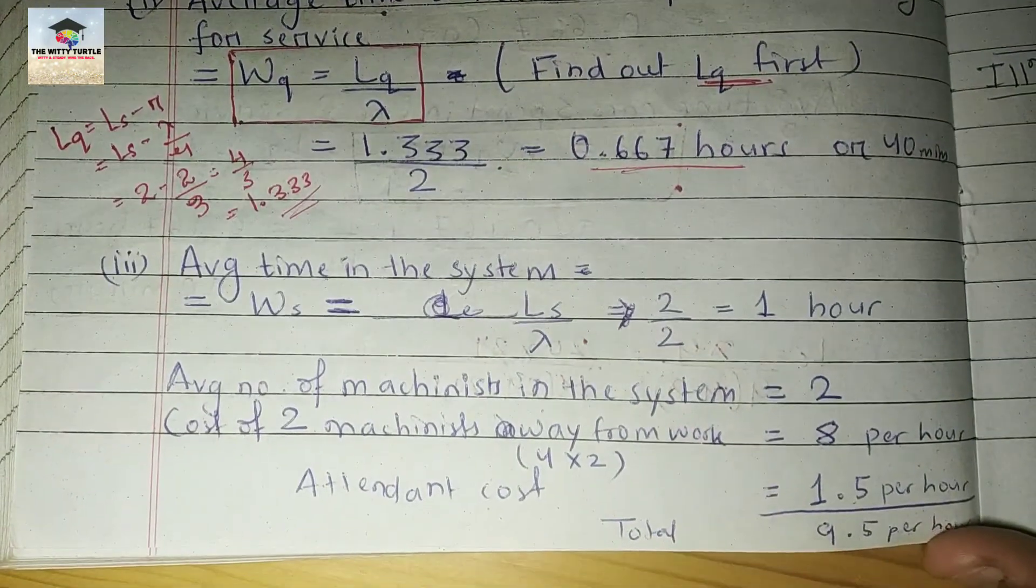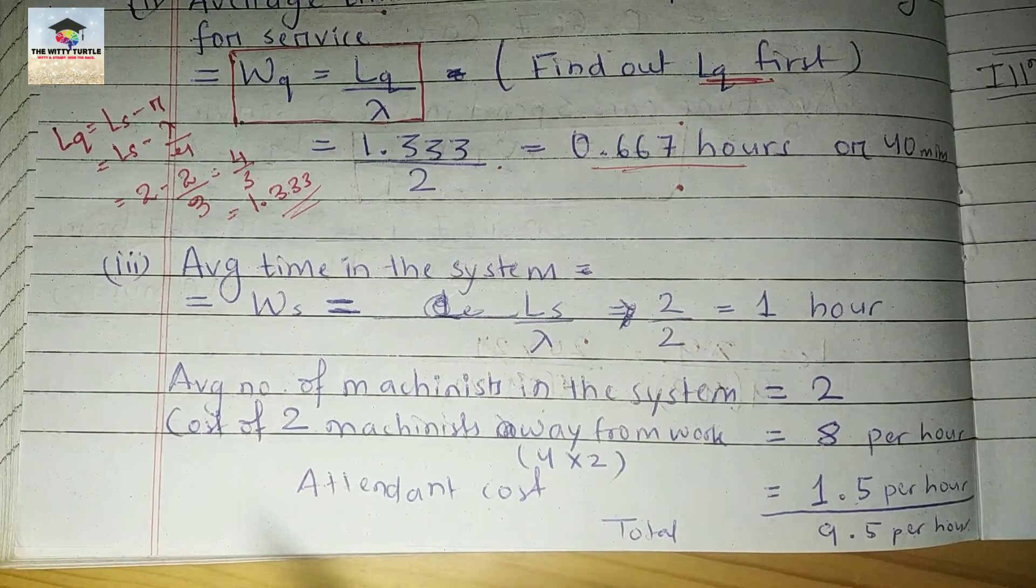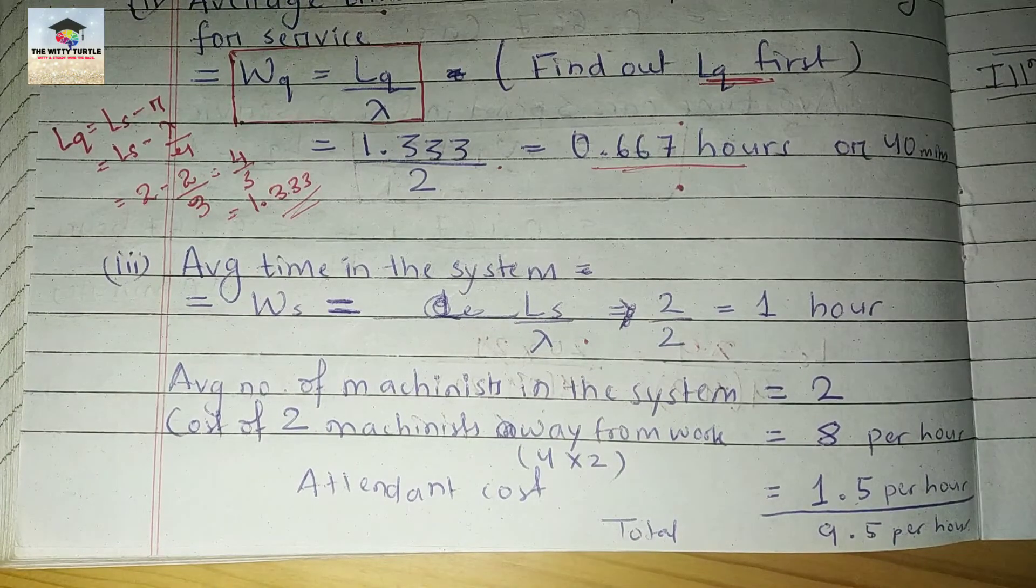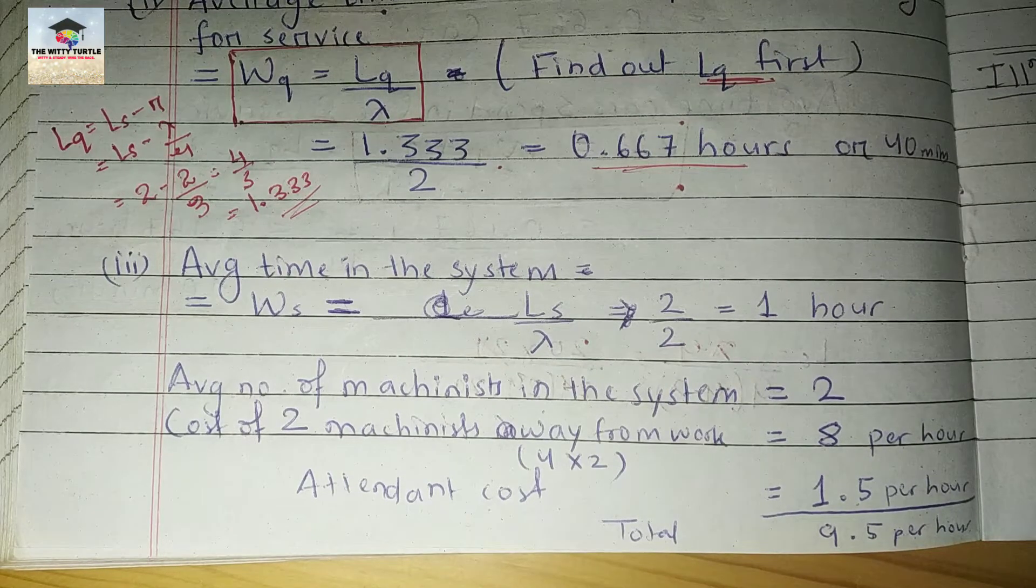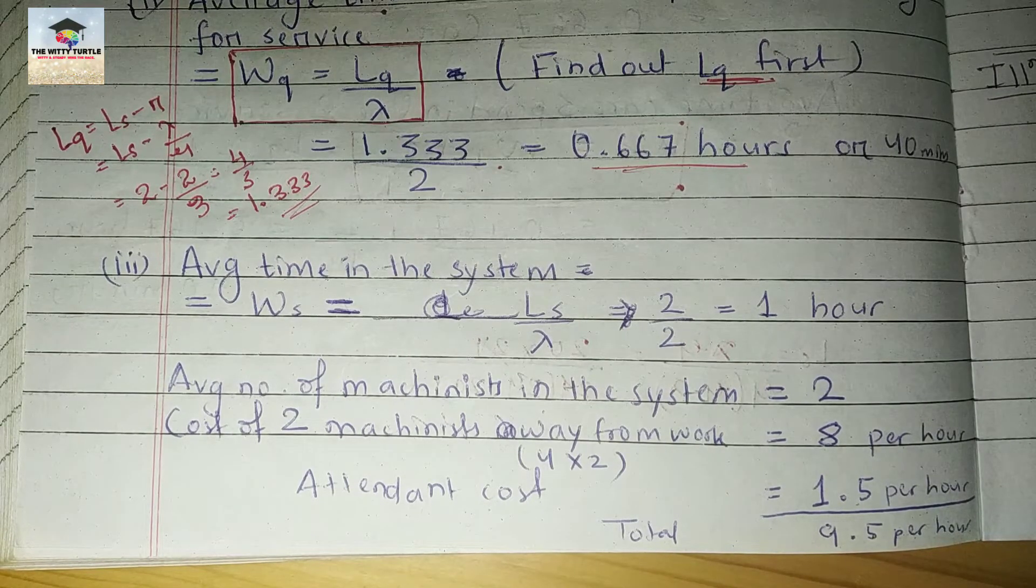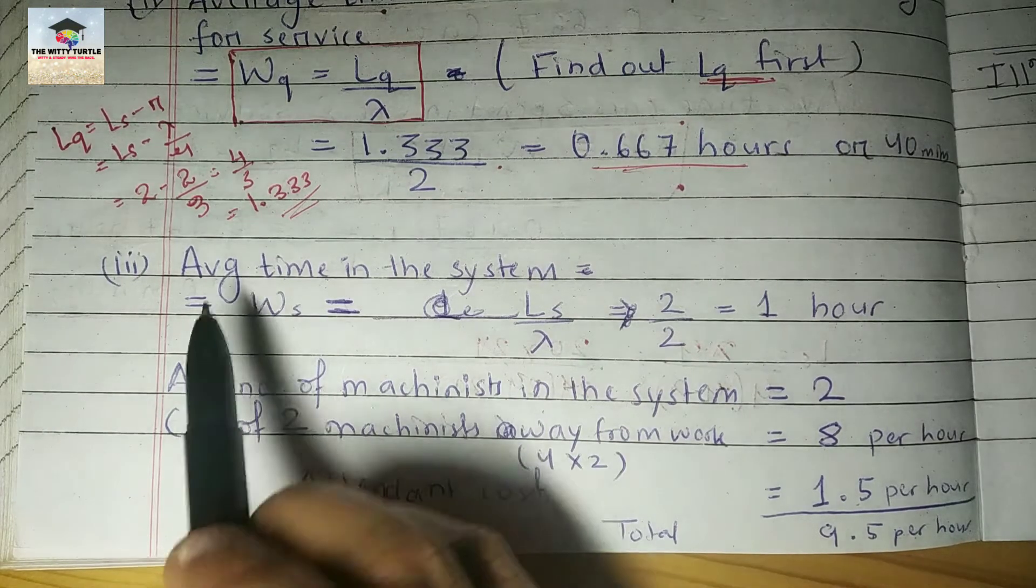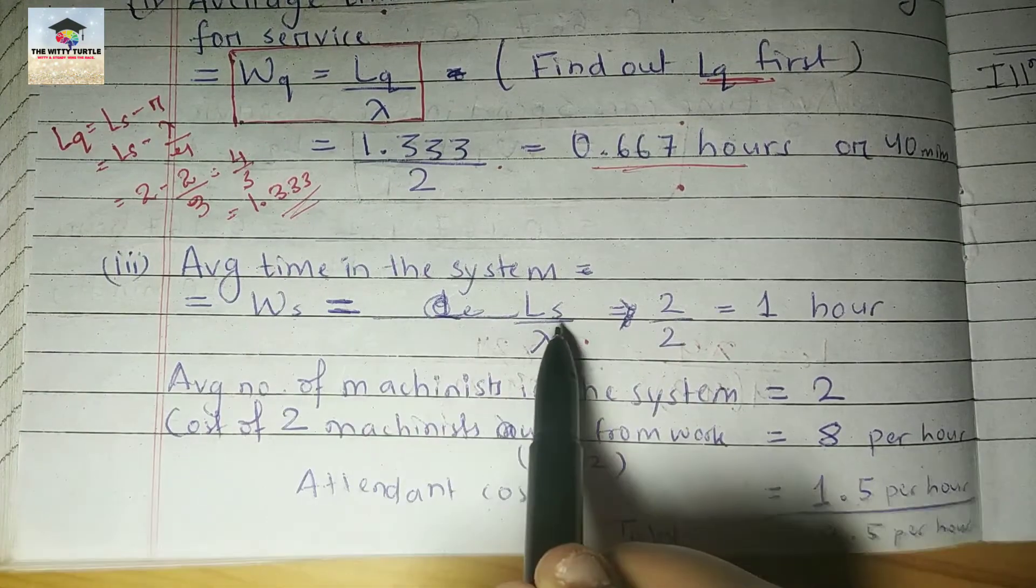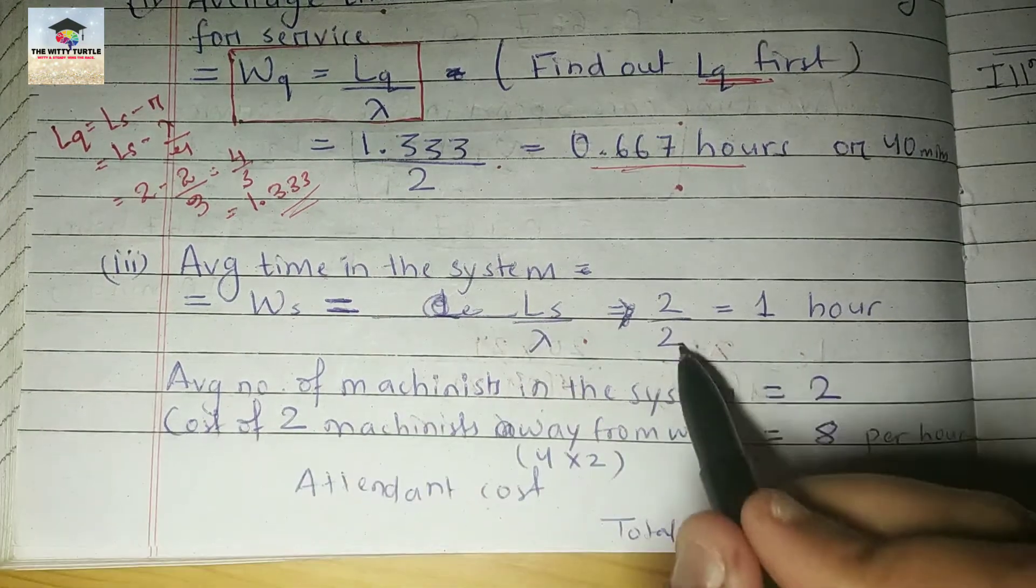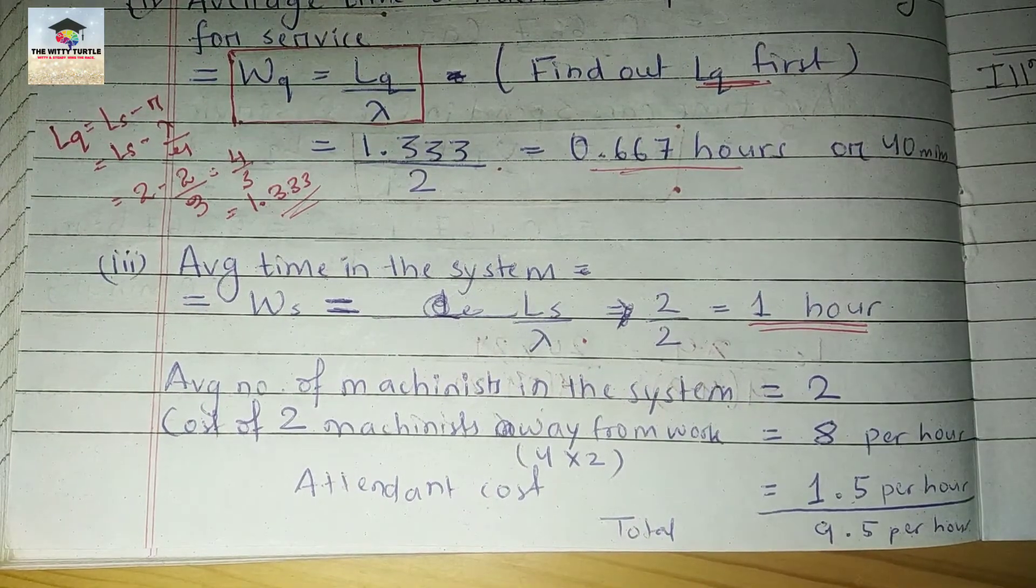Now the third point is asking for total cost of operating the system for an 8-hour day. To calculate the total cost for 8 hours, we need to find out the total cost for 1 hour. Why 1 hour? Because the average time in the system is Ws equals Ls by lambda, that is 2 by 2, which is 1 hour.